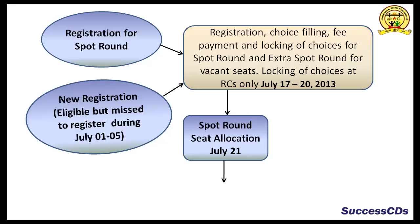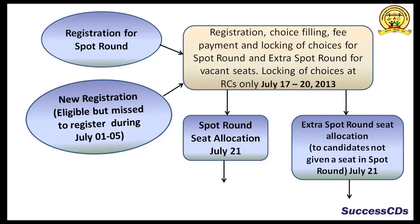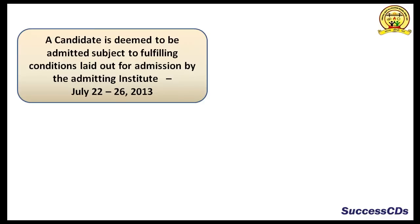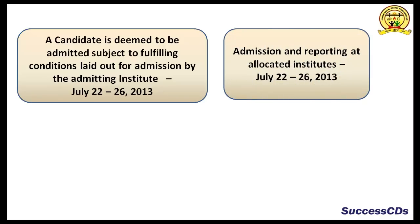The spot round seat allocation will be done on 21st of July. And the extra spot round seat allocation — for those candidates who were not given a seat in the spot round — will also be done on July 21st. A candidate is deemed to be admitted subject to fulfilling conditions laid out for admission by the admitting institute from July 22nd to July 26th 2013. Admission and reporting at allocated institutes will be done between July 22nd to July 26th 2013.